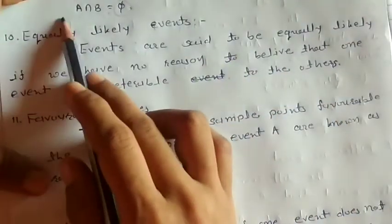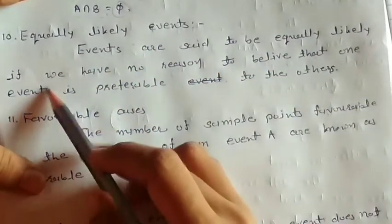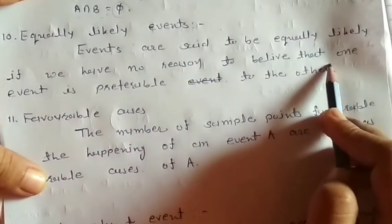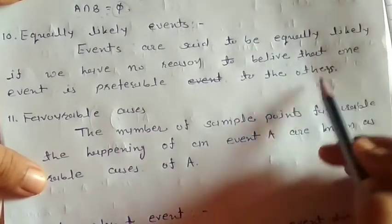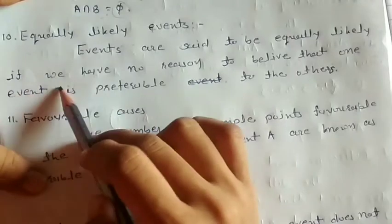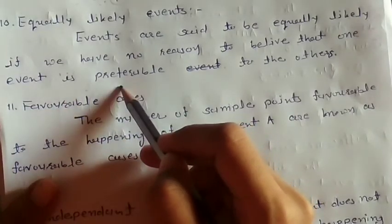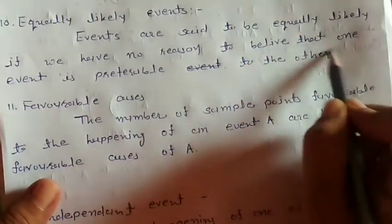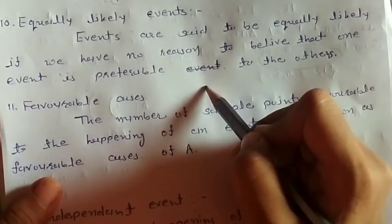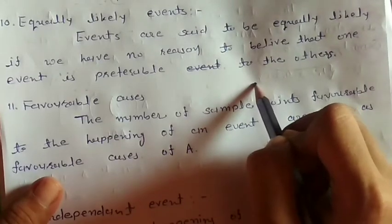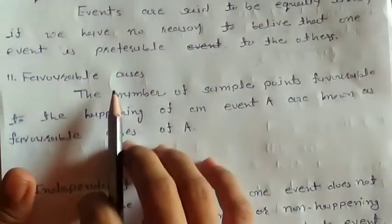Number 10: Equally Likely Events. Events are said to be equally likely if we have no reason to believe that one event is preferable to the other. That means we cannot say in advance which event is preferable over the rest — we call these equally likely events.